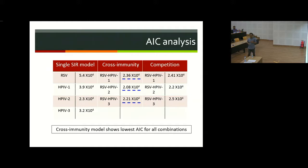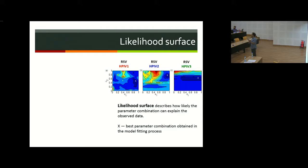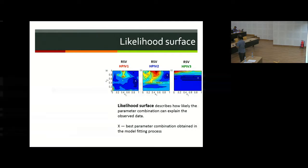AIC analysis confirms cross immunity has the lowest AIC among all three models, making it the best model for this data. We also examined the likelihood surface, which describes how likely each parameter combination is. The white mark in each panel shows the best-fit parameter combination; the blue region surrounding it shows near-optimal fits. Moving to the red region — for example, cross immunity values of 0.4 and 0.8 — cannot explain HPIV2 dynamics. This helps us understand how the two cross immunity parameters are correlated in explaining the given dataset.